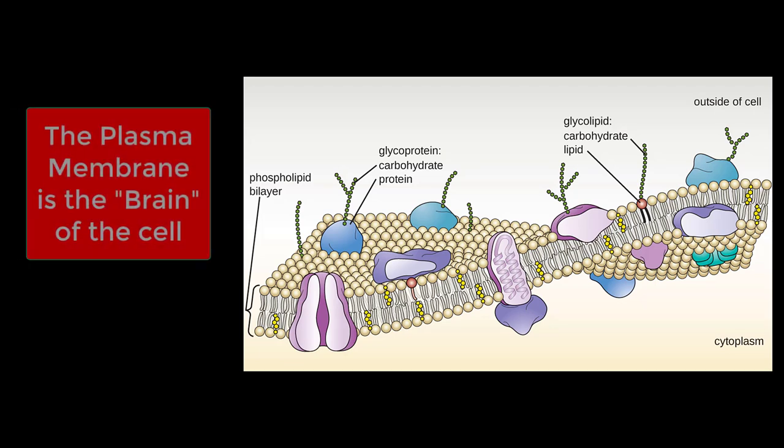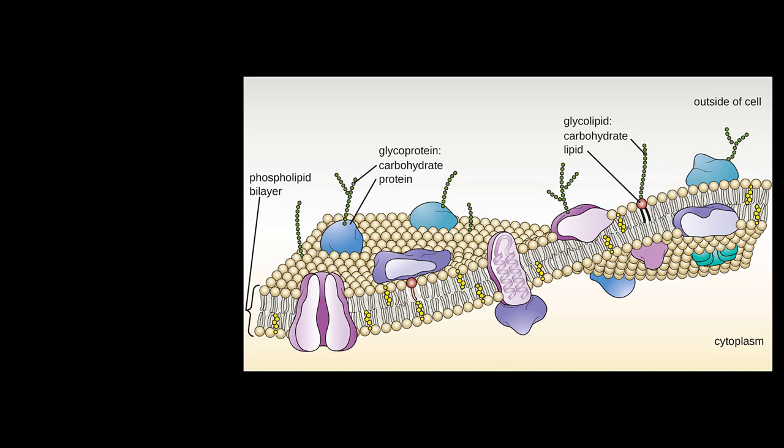I also call the plasma membrane the brain of the cell. I know when you talk about control centers and brains, people usually think of the nucleus, but the plasma membrane is what senses the external environment and responds—just like your brain receives sensory information and then responds. So I like to think of it as really a much more important piece than just a wall.